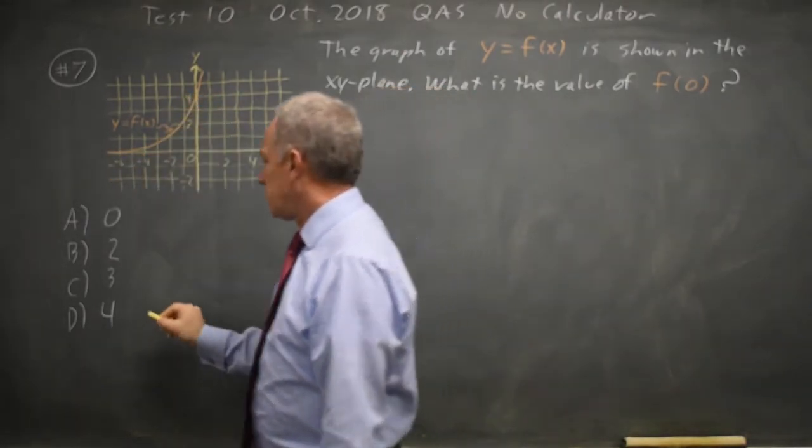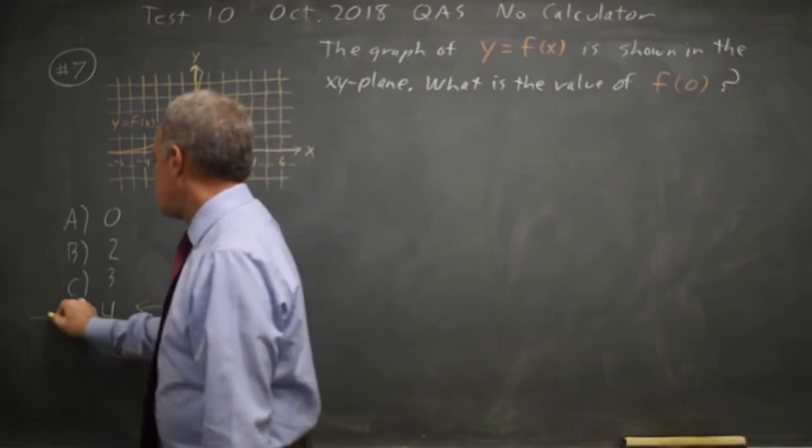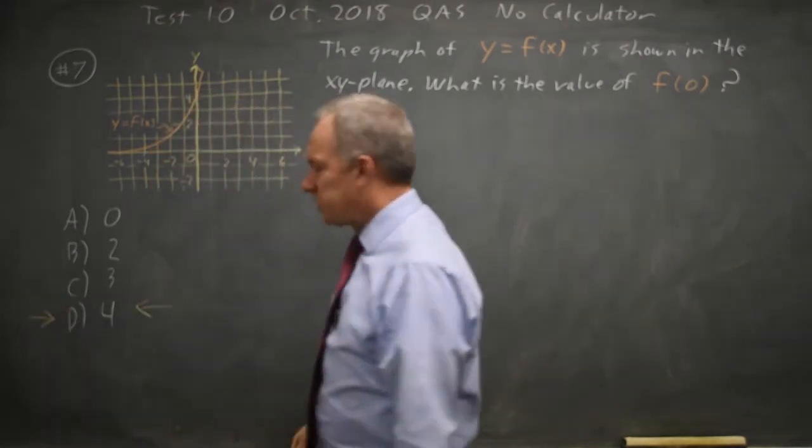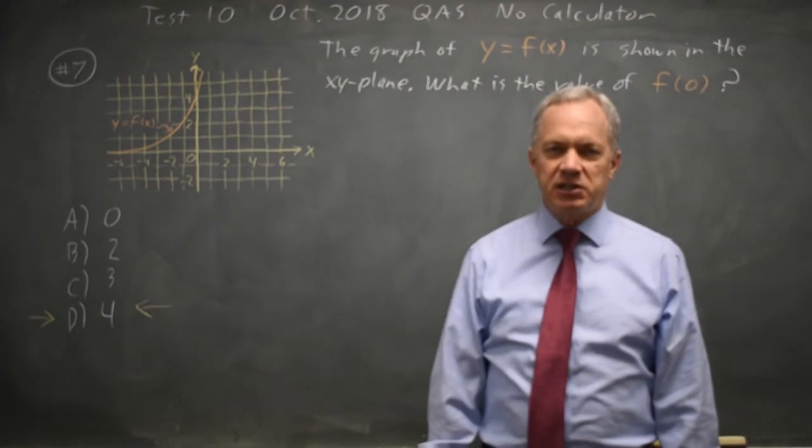The y-intercept is at y equals 4, so that would be choice D. The hard part here is getting used to the f of x notation.